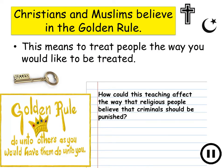We now need to look at another one of our key rules. This is a Christian and Muslim teaching — the golden rule. This means that you should treat other people the way that you want to be treated. Think about how this teaching could affect the way that religious people believe criminals should be punished. Pause the video now and use the golden rule to explain your answer.